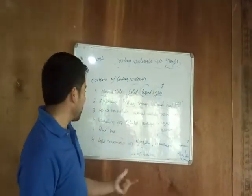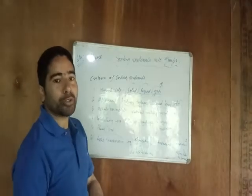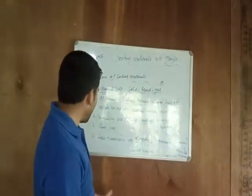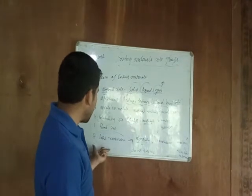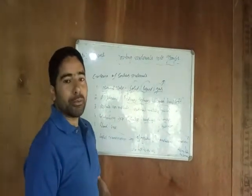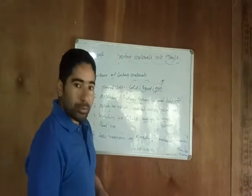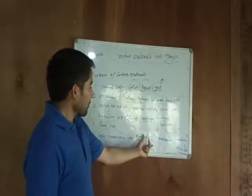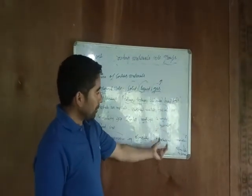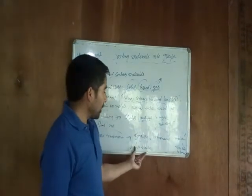Number four is solubility — we check whether a material is soluble or insoluble in water. Number five is float or sink — whether the material floats or sinks in water. Number six is light transmission — whether it allows full light, partial light, or does not allow light to pass through it.